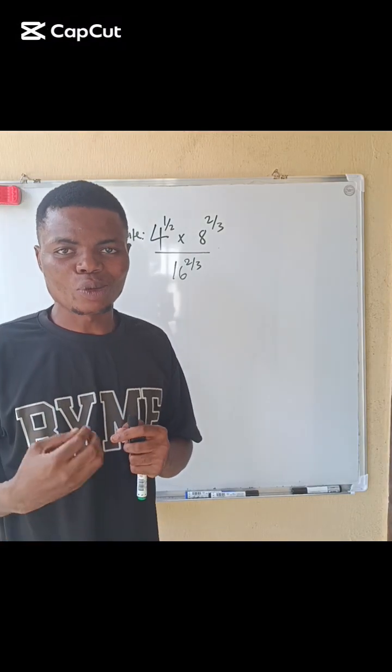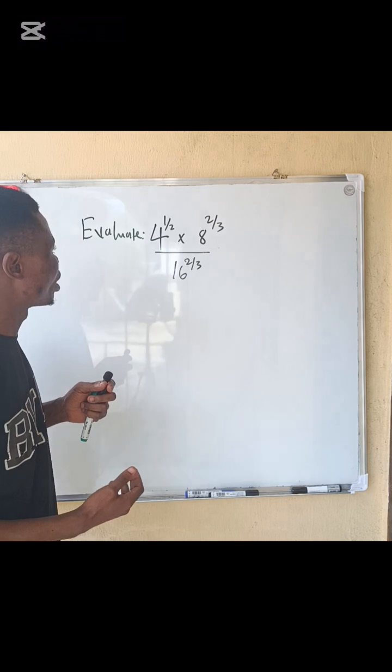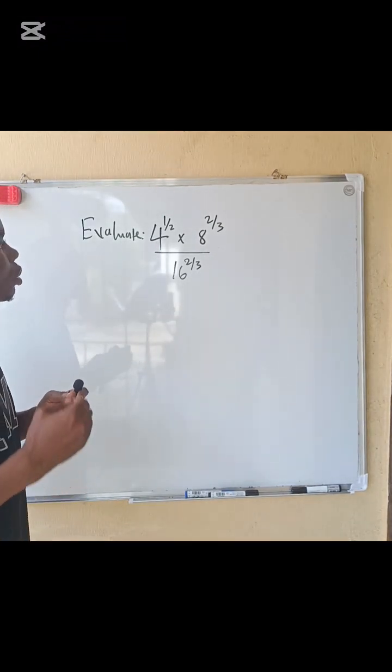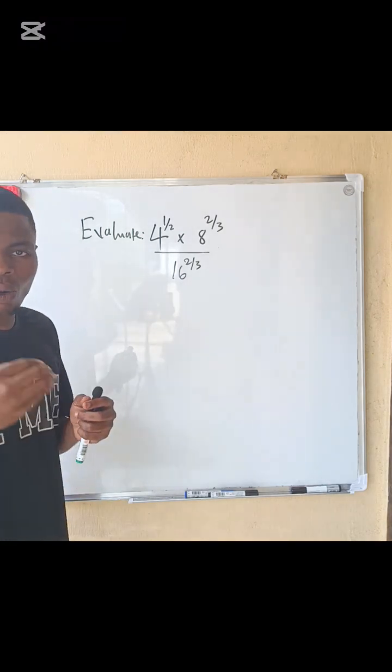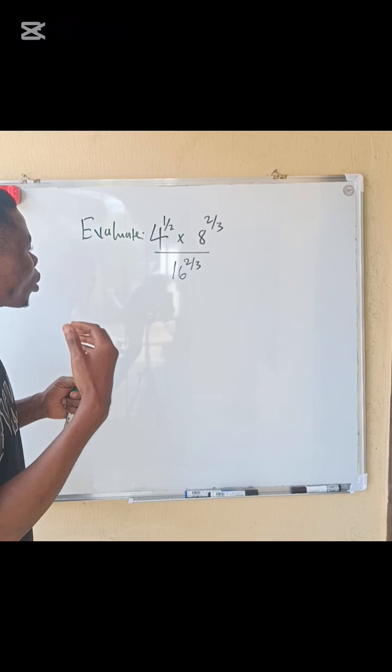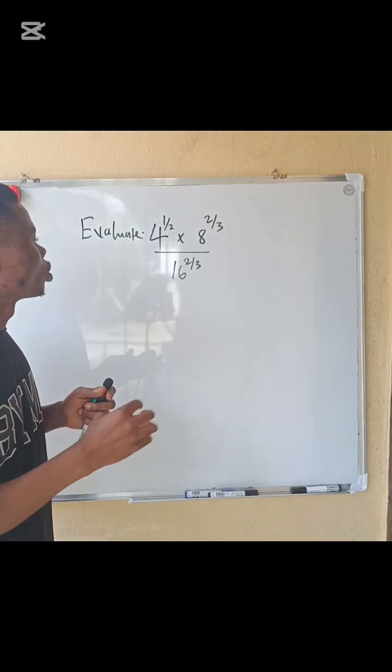Good day guys, let's solve the simple question before us. We are asked to evaluate 4 power 1 over 2 multiplied by 8 power 2 over 3, all over 16 power 2 over 3. What do we do? The first thing you have to do is make all of them have the same base. So let's see what we can do.